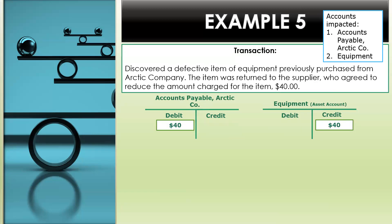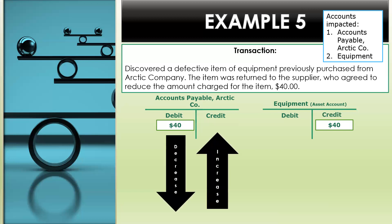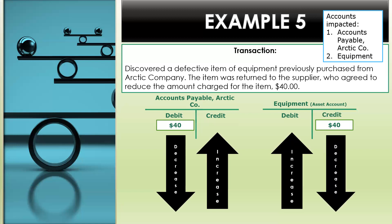Last transaction for this mastery — example five, business transaction: discovered a defective item of equipment previously purchased from Arctic Company. The item was returned to the supplier, who agreed to reduce the amount charged for the item by $40. This specific transaction impacts accounts payable — Arctic Company — and the equipment account. You should know that the equipment account is an asset account. We'll do a $40 debit to accounts payable for $40. This $40 credit to the asset account decreases the account.